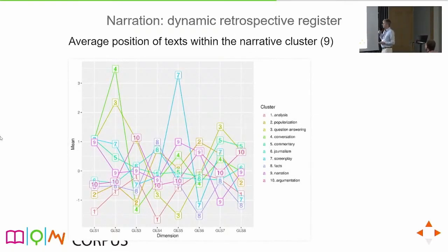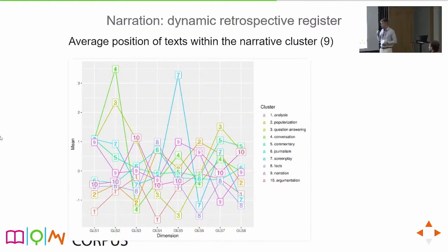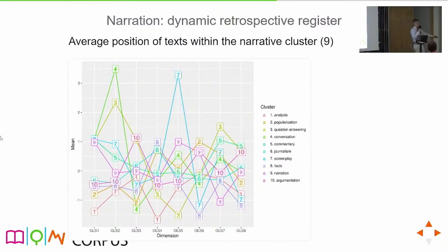There is a chart of all registers that can be hard to read, but following register nine — narration — you can see its position across dimensions. On the first dimension it is quite high, so it is dynamic. On the seventh dimension it is specifically retrospective. That's how we labeled the registers. Now I'm getting to lexicography — leaving my safe space and going into yours.